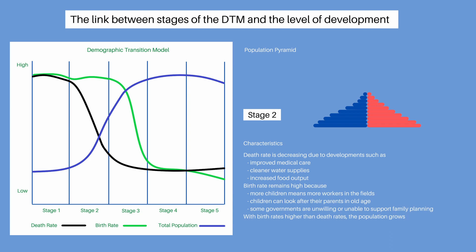The population pyramid in stage 2 has a wide base reflecting high birth rates. But with people starting to live longer due to development, the pyramid becomes more triangular in shape and is slightly taller, showing some people are living to older ages.